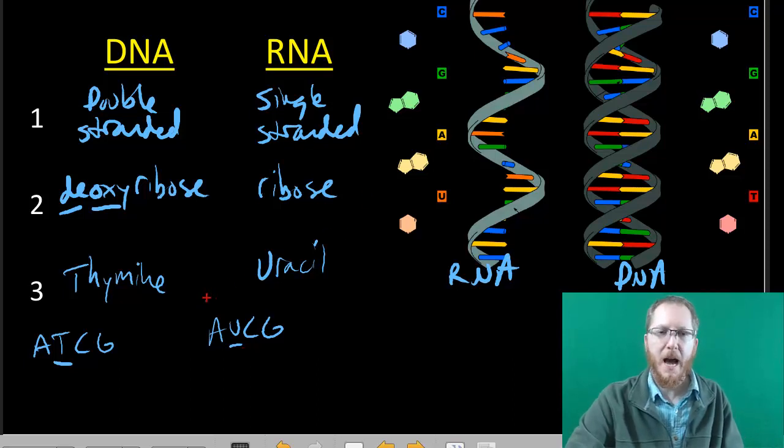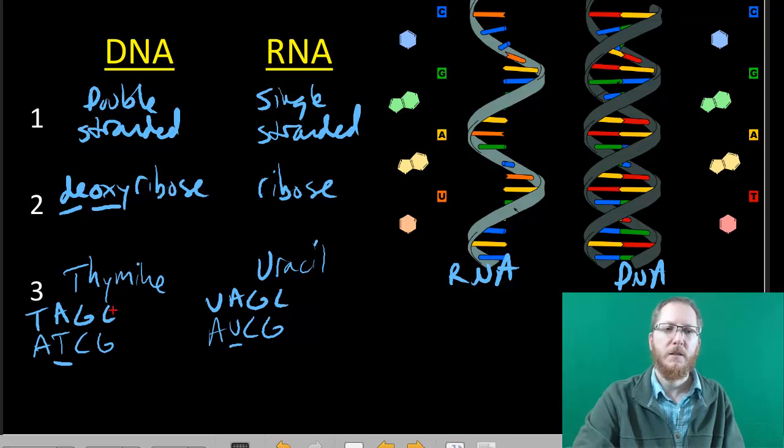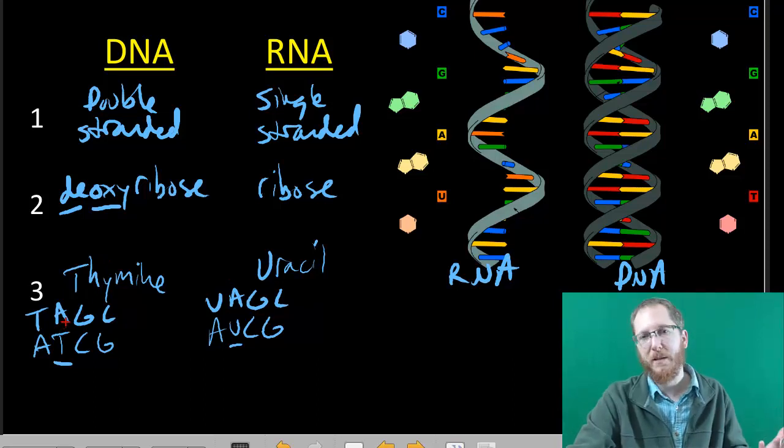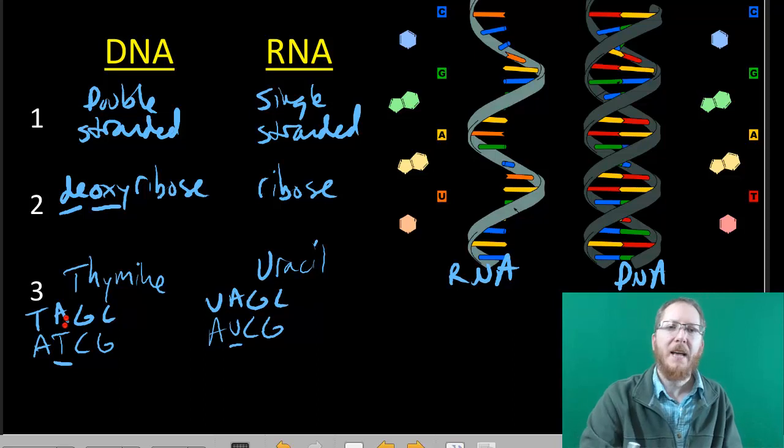Now if we were copying this, you would still make this and copy it as U-A-G-C if it was RNA, and if you were copying this as DNA you'd see it'd be T-A-G-C. So that's once again similar, but everywhere you would normally put a thymine, you're going to put a uracil. Other than that, pretty consistent.